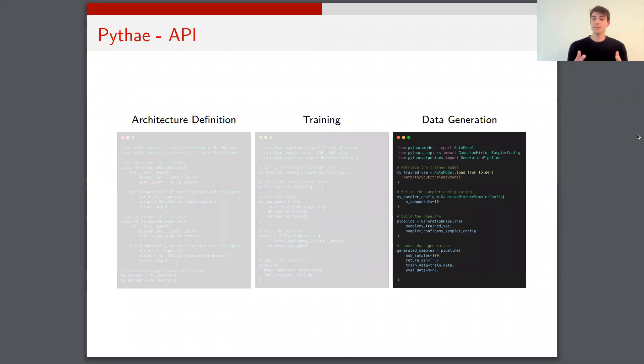In the end, once the model is trained, I can reload it using the auto model class pretty easily. And then I can use whatever sampler I like to generate new data from that trained model. So in that example, this is a Gaussian mixture sampler. So basically all you have to do is to define your sampling configuration, and you can instantiate a generation pipeline, and you can launch the pipeline by specifying the number of samples that you want to generate.